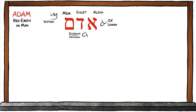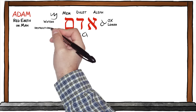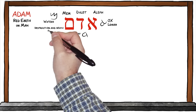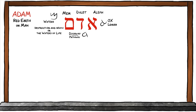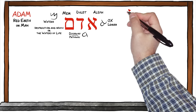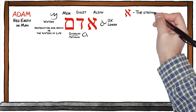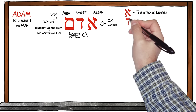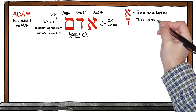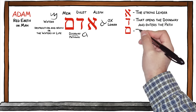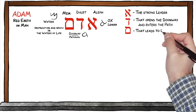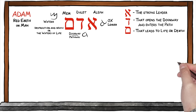Mem can be translated as the waters of chaos and confusion, destruction and death, or the waters of life. So let's translate the picture language of the Hebrew word Adam: Aleph, the strong leader; Dalet, that opens the doorway and enters the path; Mem, that leads to life or death.